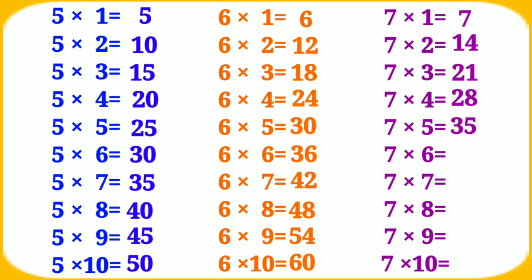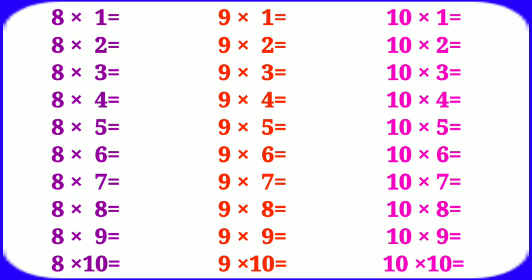7 sixes are 42, 7 sevens are 49, 7 eights are 56, 7 nines are 63, 7 tens are 70.